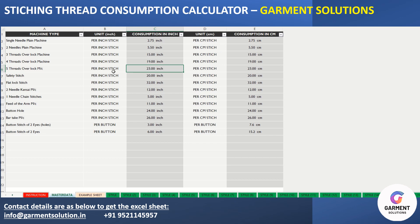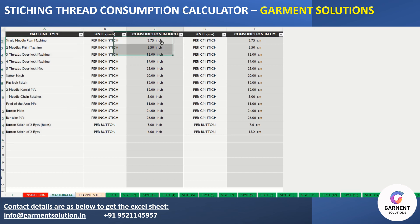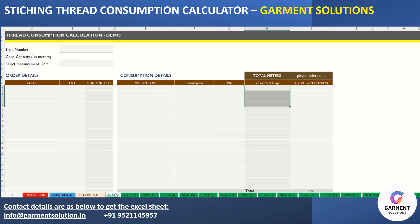This sheet is a master data sheet in which all the machine types and their consumption will be mentioned. It will work as a calculation base for all the styles.